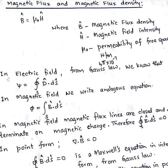From Gauss's law in electric fields, electric flux psi = surface integral of D dot dS. Analogously, in magnetic fields, magnetic flux phi = surface integral of B dot dS. However, in magnetic fields, the flux lines are closed and do not terminate on magnetic charges, unlike electric flux lines which terminate on electric charges. Therefore, the surface integral of B dot dS equals zero.